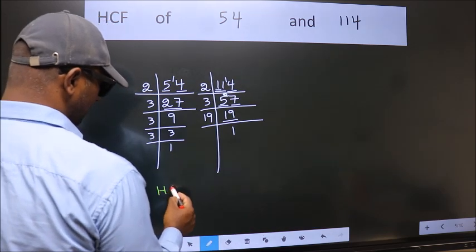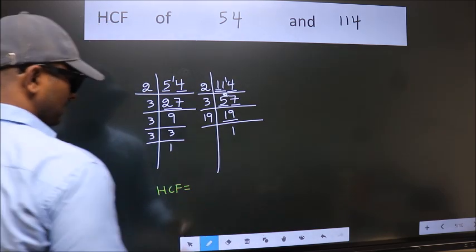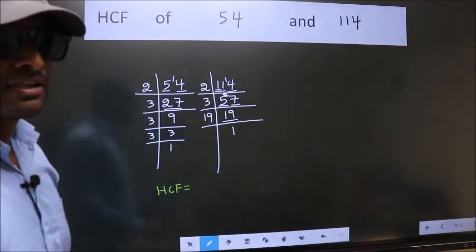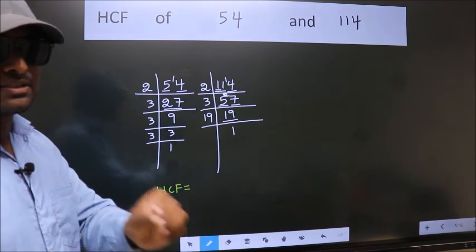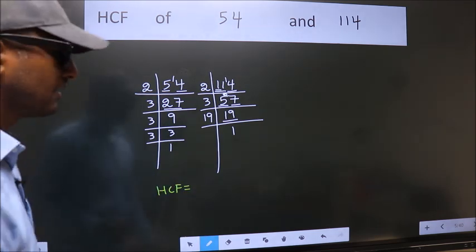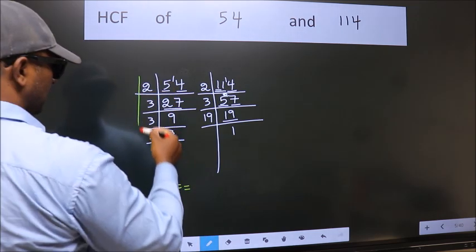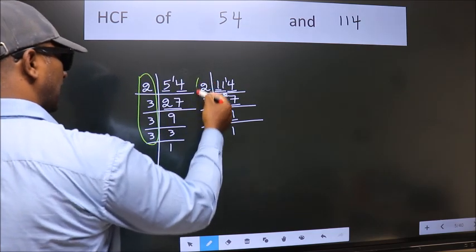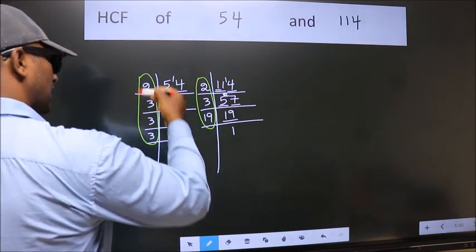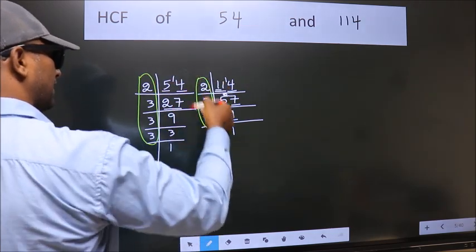Therefore, our HCF is the product of the numbers which should be present over here and also here. Here and here.